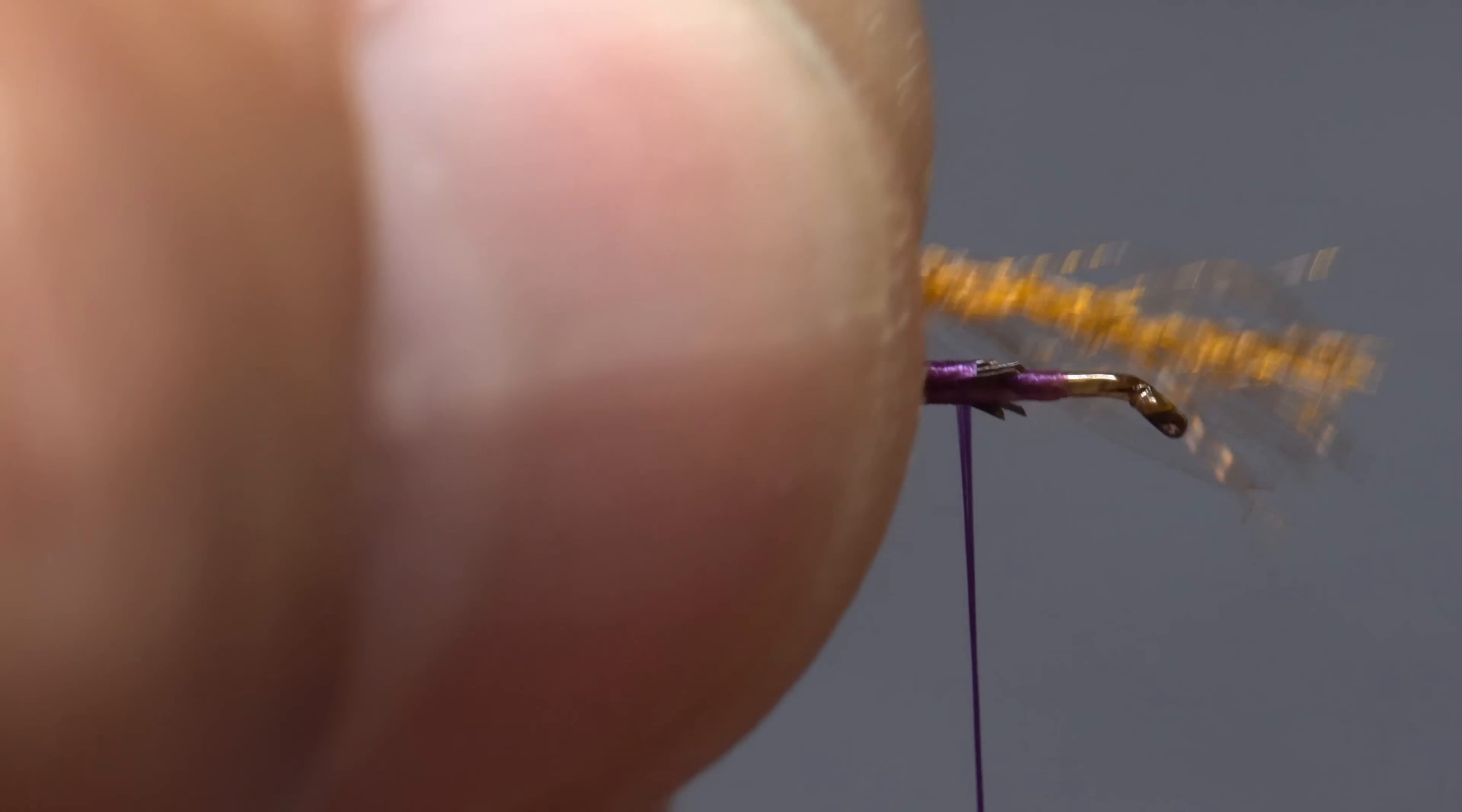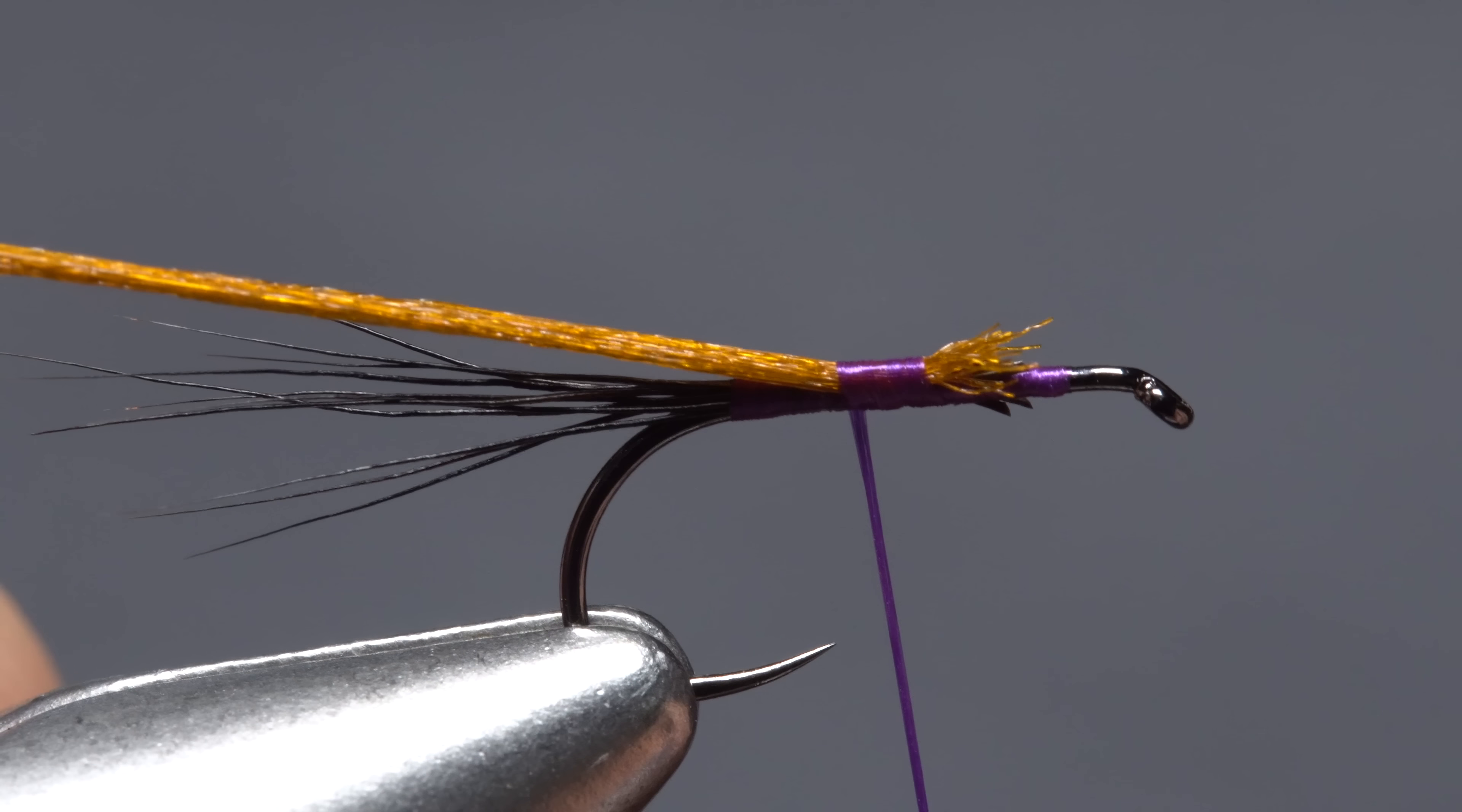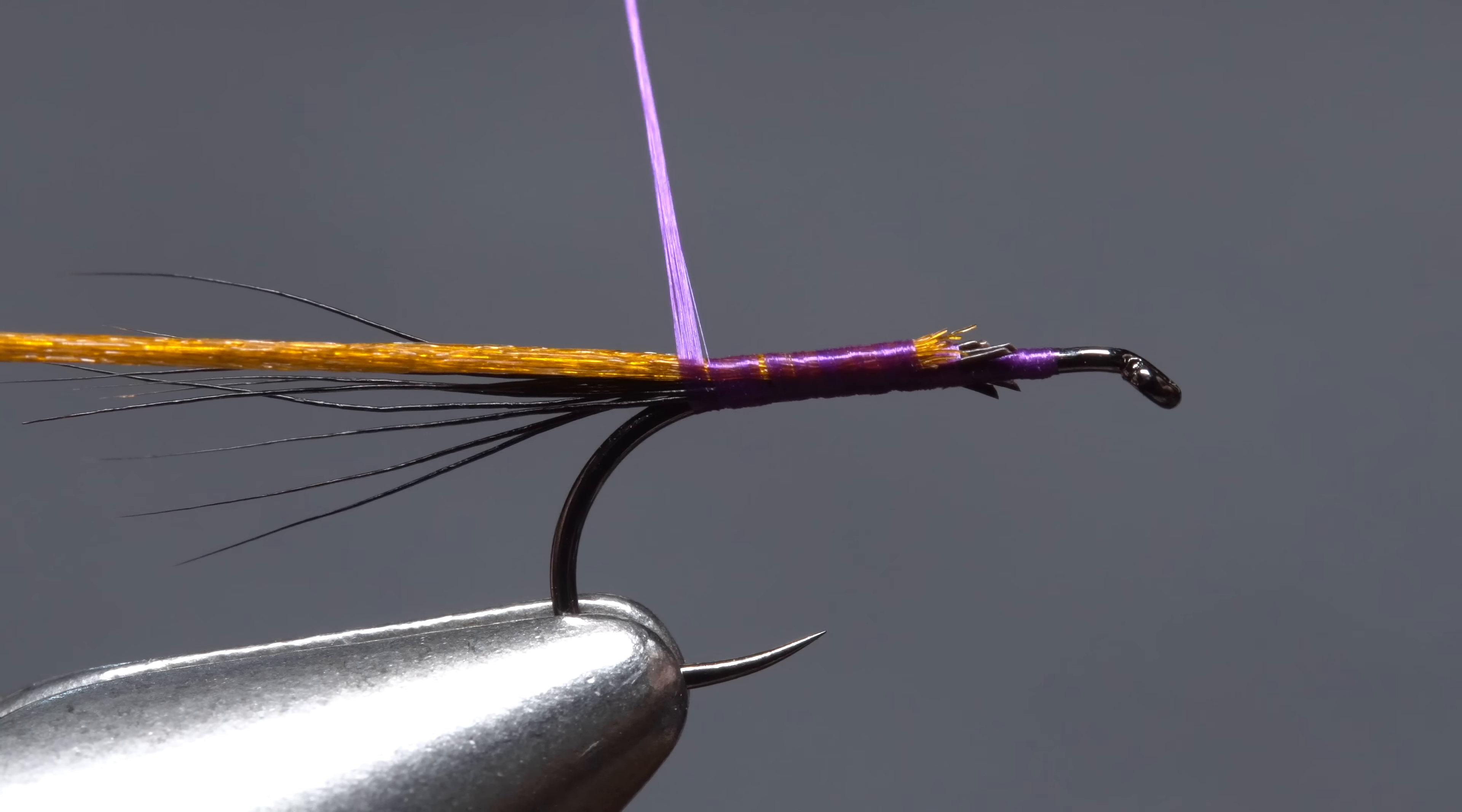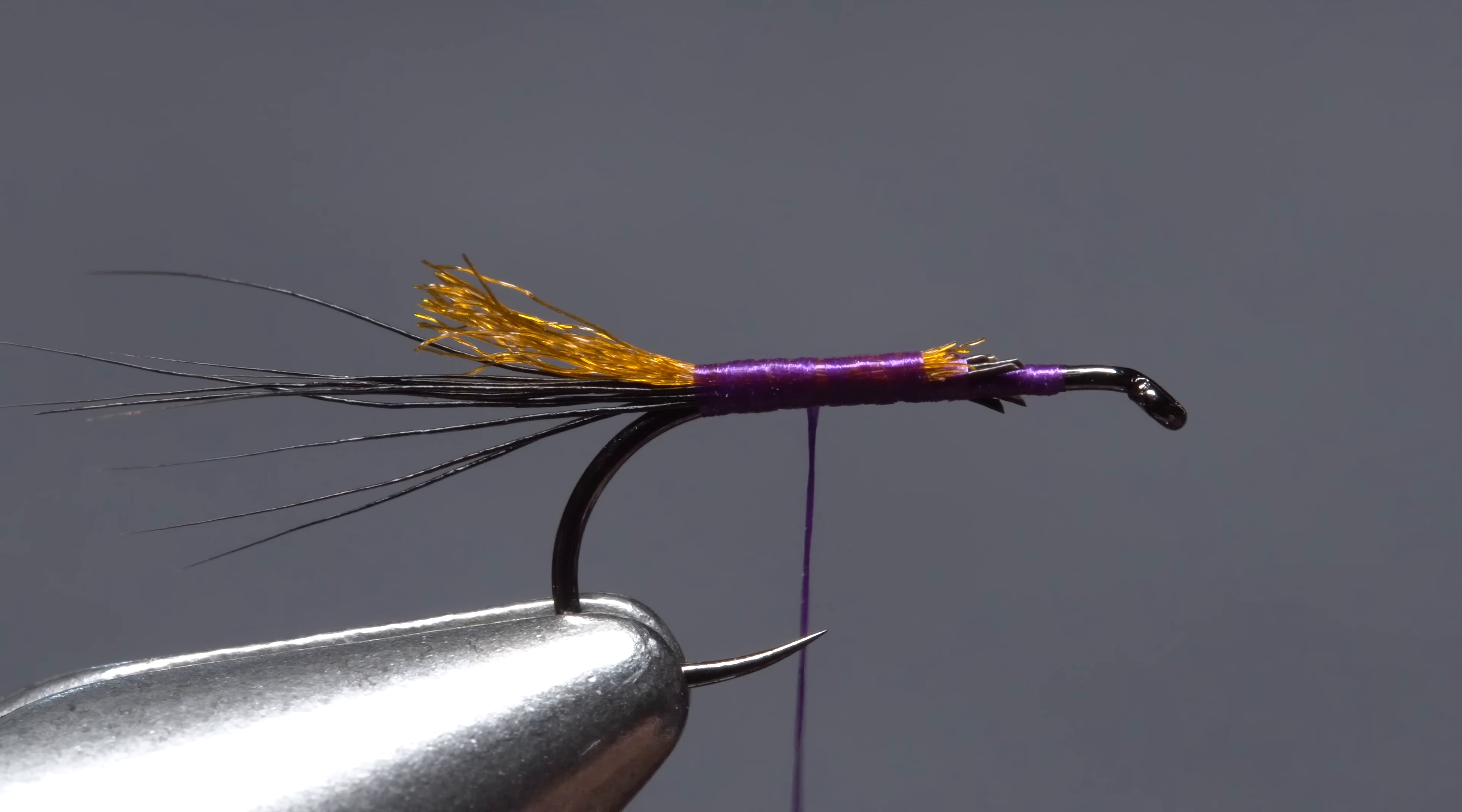Place the snipped off ends of the other half on top of the hook shank and take three or four somewhat loose thread wraps rearward to corral the yarn. Gently pull on the material to shorten the butt ends, then continue taking thread wraps rearward to the base of the tail. Advance your thread forward so it hangs at the hook point. Snip the antron off so it extends just about halfway down the tail of the fly.